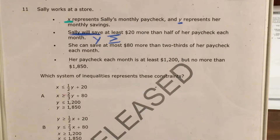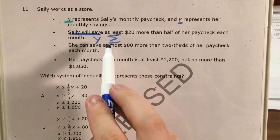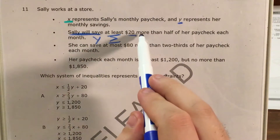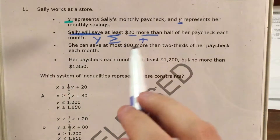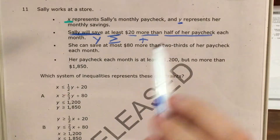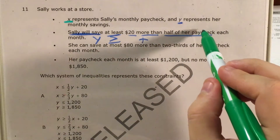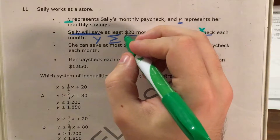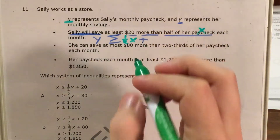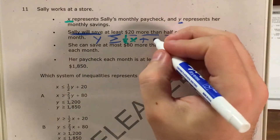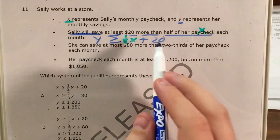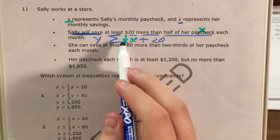If I have at least five dollars, I could have five dollars — that would fulfill 'at least' — but I could also have six, seven, eight, and so on. So Y is greater than or equal to twenty dollars more than... and 'more than' is something I translate into addition. When I see half of her paycheck, paycheck is X. So that's going to be one-half X plus twenty — twenty dollars more than half her paycheck.